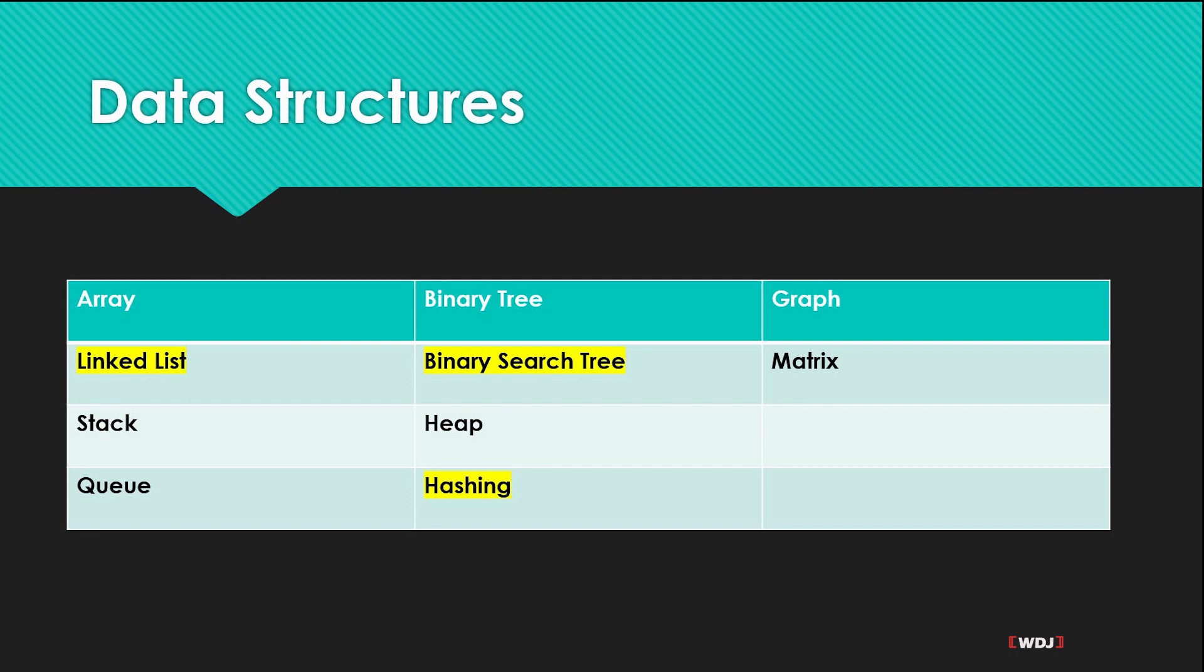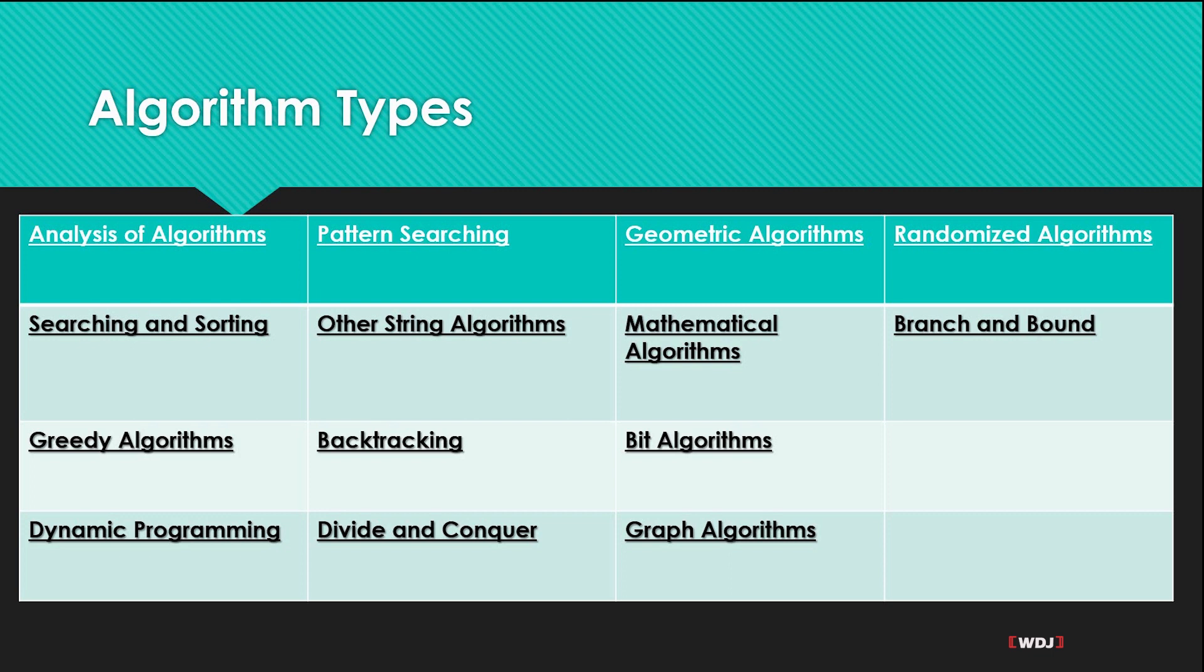There's no doubt that data structures are very important. We all know the importance of storing data to display information that we could see. But what really confuses people is the algorithm part of it. So what are algorithms?